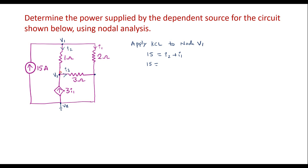I2 is the potential difference between the two nodes divided by the resistor: (V1 − V2) / 1. I1 is the potential difference between this node and the reference node divided by 2 ohms: since the reference voltage is 0, I1 = V1 / 2. Simplifying: 15 = V1 + V1/2 = 1.5·V1 − V2. This is Equation 1.